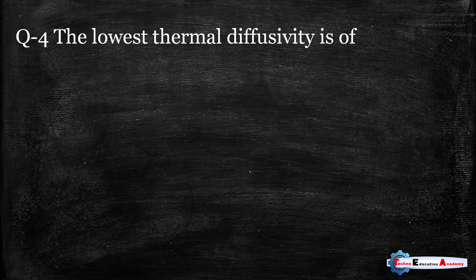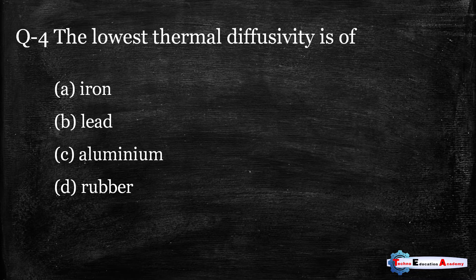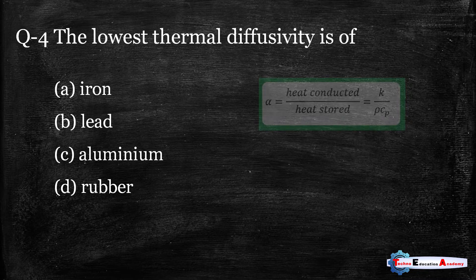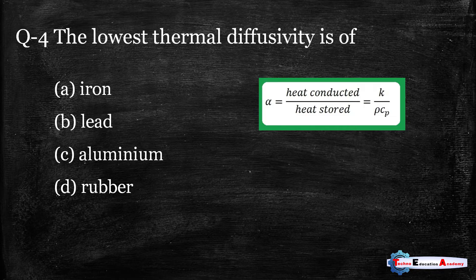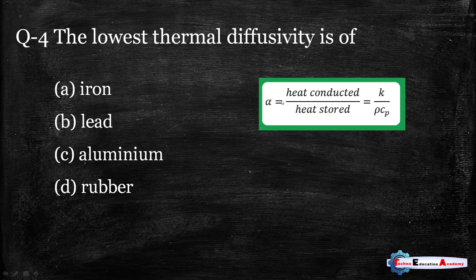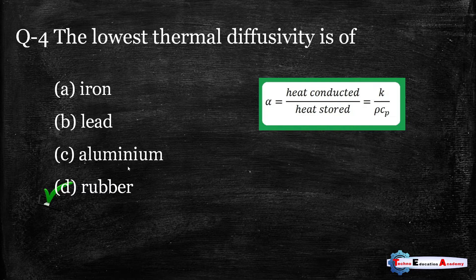Question number four: The lowest thermal diffusivity is of — option A iron, option B lead, option C aluminium, option D rubber. Thermal diffusivity is the ratio of k/(ρc), or heat conducted to heat stored. The lowest thermal diffusivity belongs to the material with lowest thermal conductivity and lower density. Rubber is a poor conductor of heat, and compared to iron, lead, and aluminium, its thermal diffusivity is the lowest. So the correct answer is rubber.